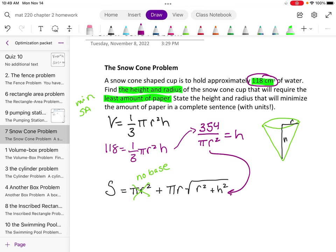And I'm going to then get a function for the surface area with respect to just r. So I have pi r the square root of r squared plus 354 over pi r squared all squared.